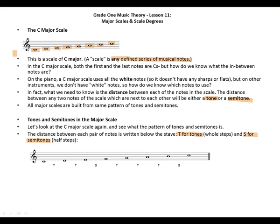Let's take a look again at our C major scale. From C to D, it's a tone. From D to E, another tone. From E to F, it's a semitone. From F to G, it's a tone. From G to A, it's a tone. From A to B, it's a tone. From B to C, it's a semitone.